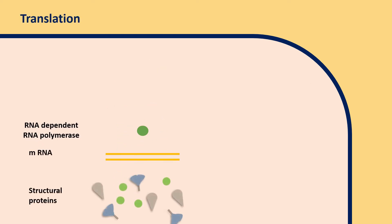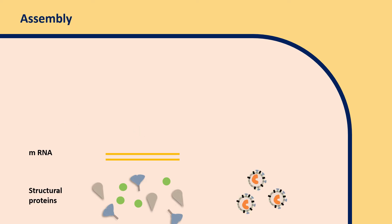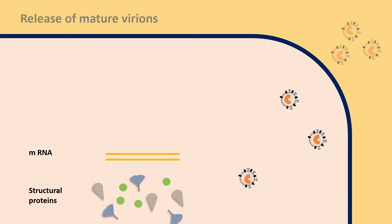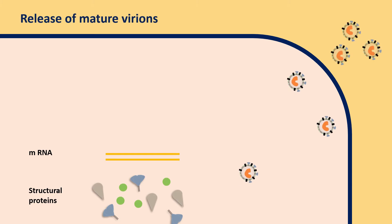RNA-dependent RNA polymerase also facilitates the formation of other structural proteins like spike, M, E, and the nucleocapsid protein. In the stage of assembly, the mRNA and structural proteins are packed into small virions. Finally, these virions are released out either through exocytosis or due to cell lysis.